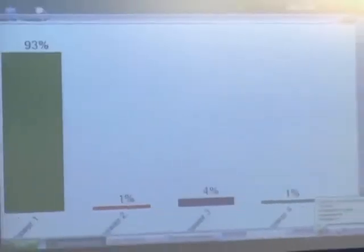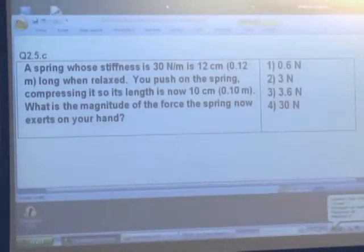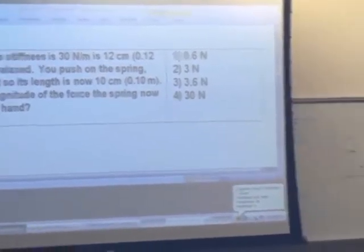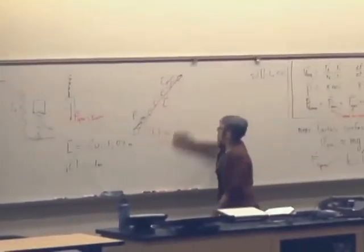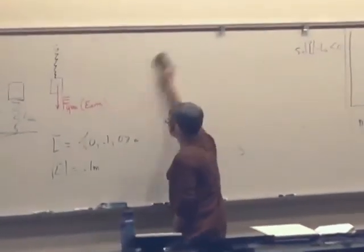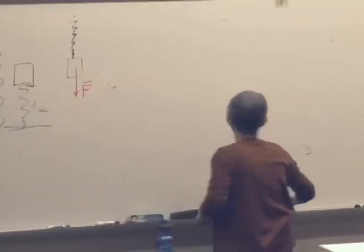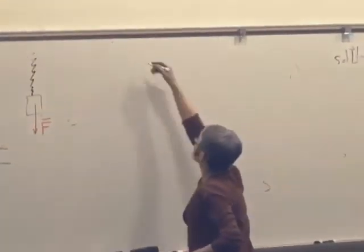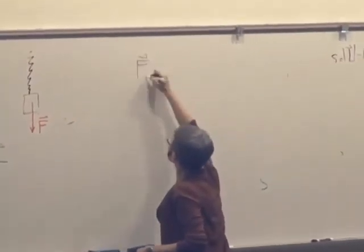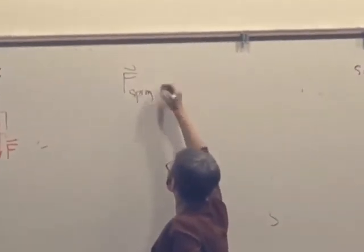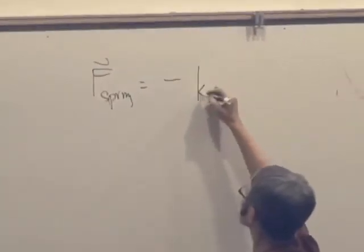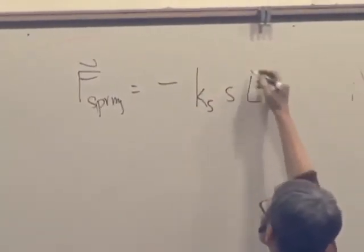Looks like 1. So let's see how you calculated this. So we have the full vector equation. The spring force is minus k sub s times s times l hat.